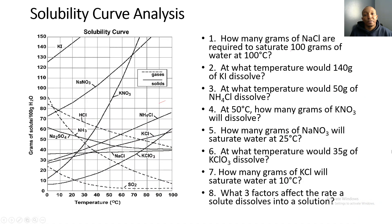Now let's look at some solubility curve analysis problems. Number one: how many grams of sodium chloride are required to saturate 100 grams of water at 100 degrees Celsius? We're solving for grams of NaCl. We cross out the 100 grams of water and circle 100 degrees Celsius. The first step is to locate NaCl on the solubility curve, then go to 100 degrees Celsius on the graph.